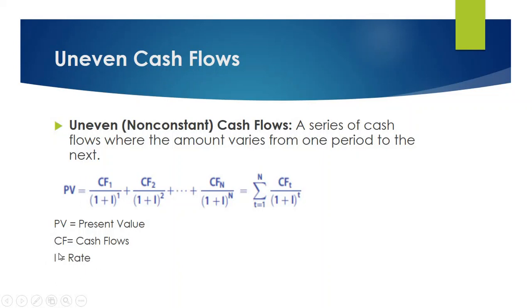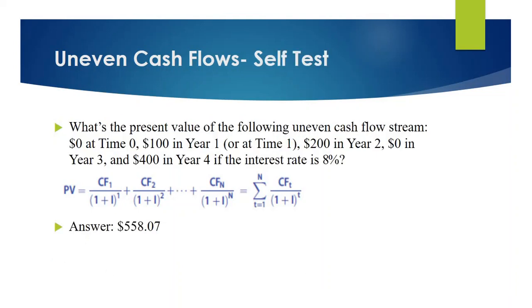You can use i, r, or r whatever you want. Now let's look at a self-test of uneven cash flows.